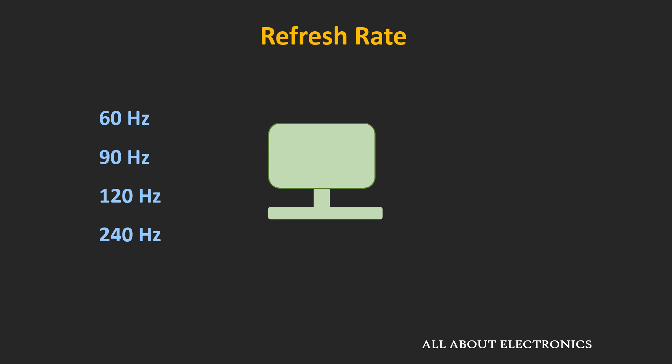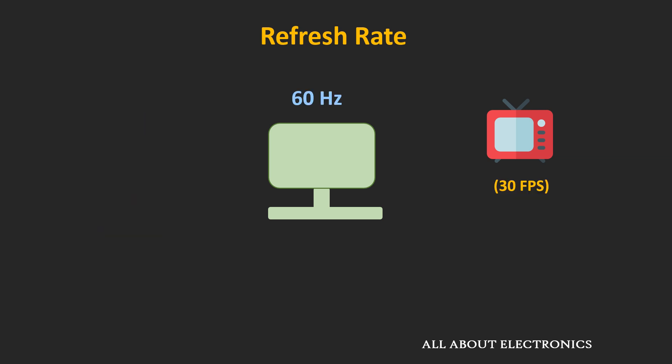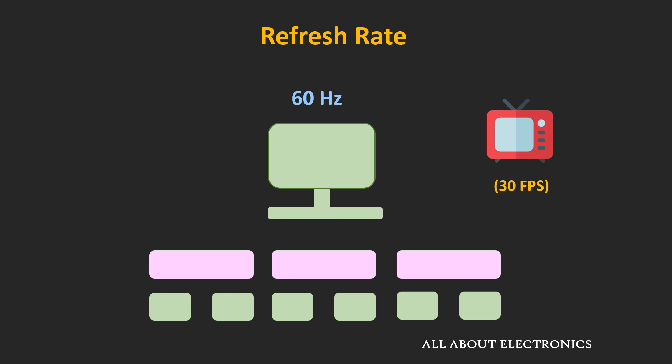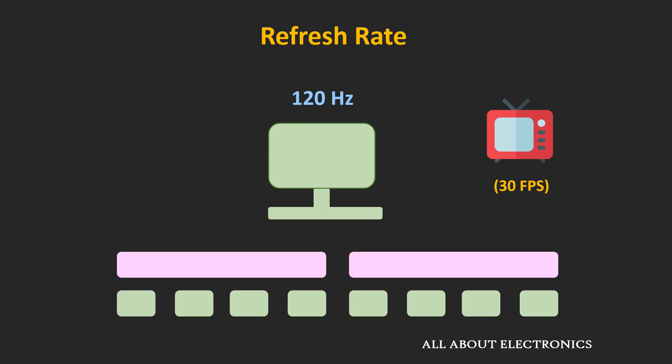There are some displays available at higher refresh rates, and there is a general belief that a higher refresh rate gives a better viewing experience. But actually, it depends on the frame rate of the content being shown. For example, if you watch 30 fps content on either a 60 Hz or a 120 Hz display, you won't feel much difference. In the case of a 60 Hz display, the same frame is displayed twice per second, while on a 120 Hz display, the same frame is displayed four times per second.